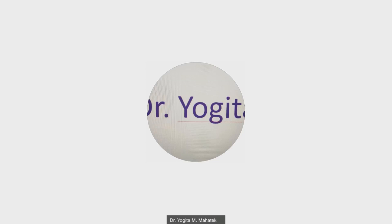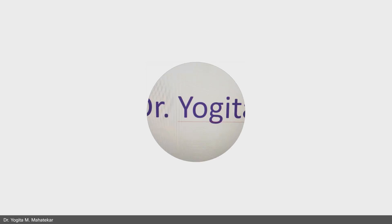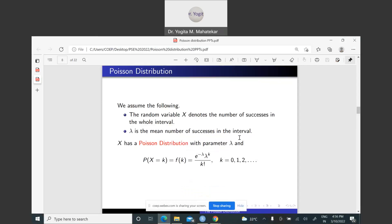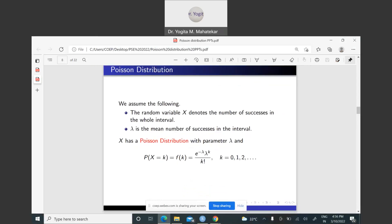In this lecture, we are going to study how to study Poisson's distribution using R software. Poisson's distribution is a discrete kind of distribution where the random variable X denotes the number of successes in a given time parameter or region, called the whole interval. Lambda denotes the average number of successes in a given interval, which can be a time interval or a region-specific interval.